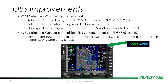When the selected course is being modified in OBS mode, the magenta line moves around on the map and you'll see your numbers change. The display of the OBS setting when controlled by the OBS knob on a remote HSI or CDI will also show. For IFDs without a radio — the IFD 545, 510, and 410 — OBS selected course control uses the bottom right knob instead of the top right.